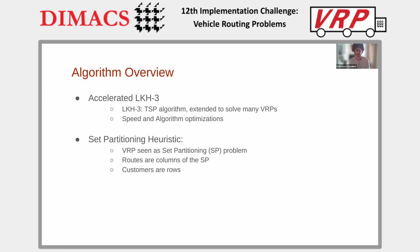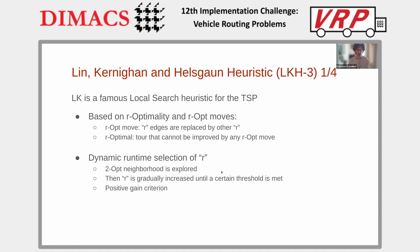The Lin-Kernighan-Helsgott heuristic, as the name suggests, is a heuristic algorithm based on the Lin-Kernighan local search heuristic for the Traveling Salesman problem. It is based on the concept of R-opt moves and R-optimality.